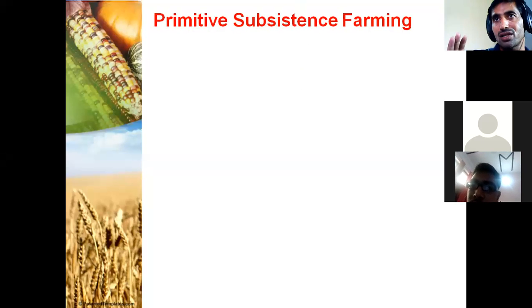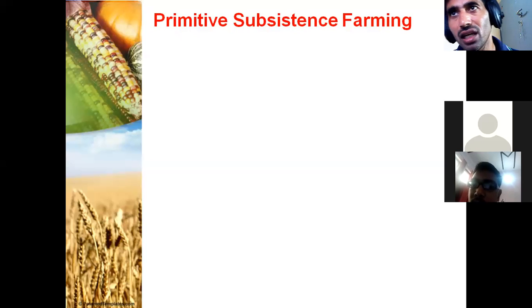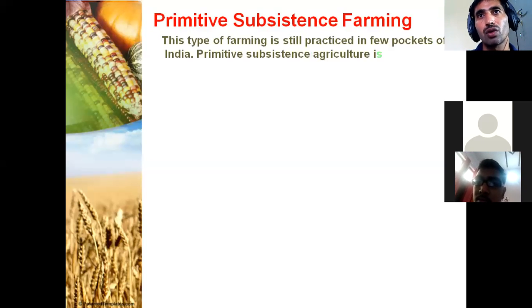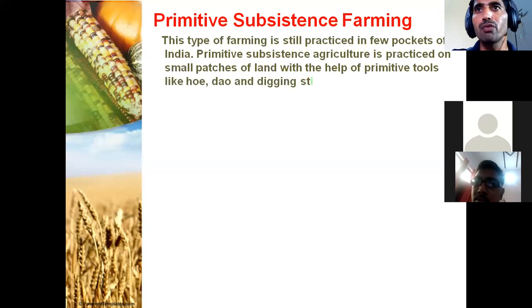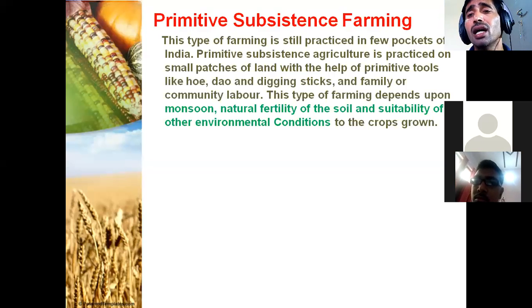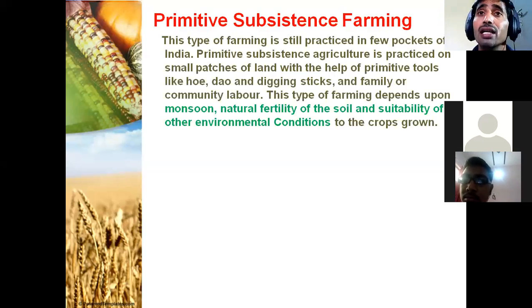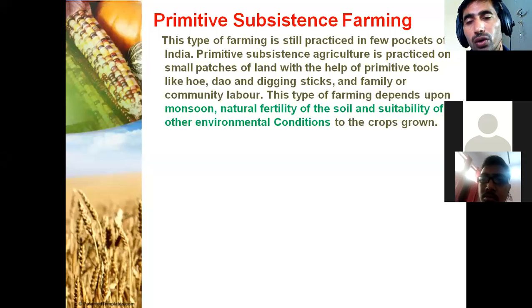Agriculture is the base of the secondary and tertiary sectors. It is the supplement of manufacturing and services, because if there is no raw material in the industries, industries can't produce anything and tertiary activities cannot function. Agriculture is also a very old activity.